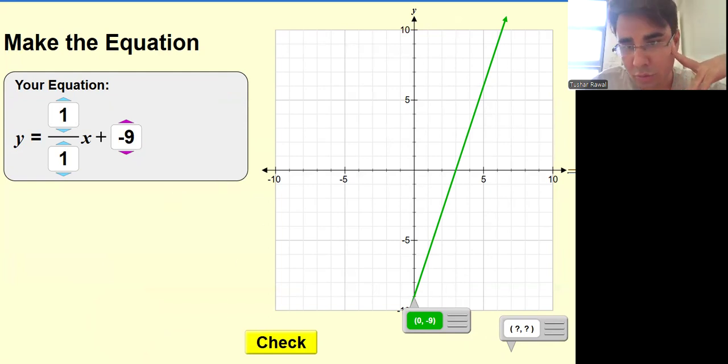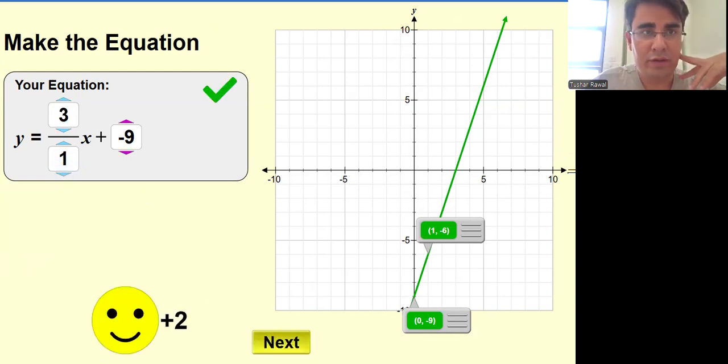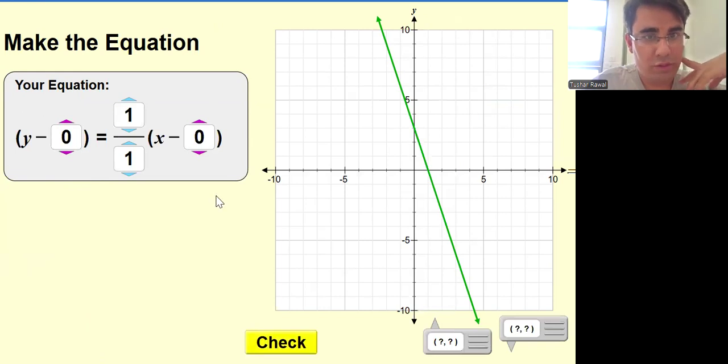So what is the slope? Let me just figure out one more point on this line. Yeah, here it is. So from this particular point, how many points are we moving up? One, two, three - so three points up. Three points up and one point right. So that's the answer. Perfect.